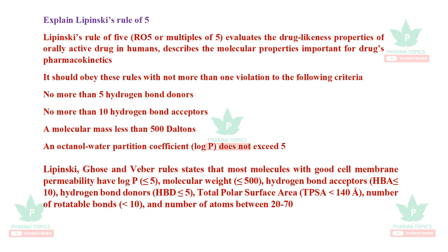What is Lipinski's Rule of Five, also called RO5? It evaluates the drug likeness properties of orally active drugs in humans and describes the molecular properties important for drug pharmacokinetics. It should obey these rules with not more than one violation: not more than 5 hydrogen bond donors, no more than 10 hydrogen bond acceptors, molecular mass less than 500 Daltons, and log P should not exceed 5.